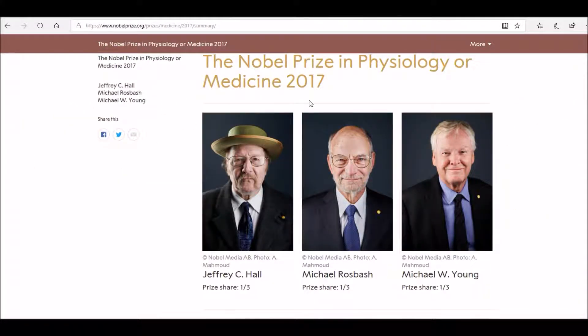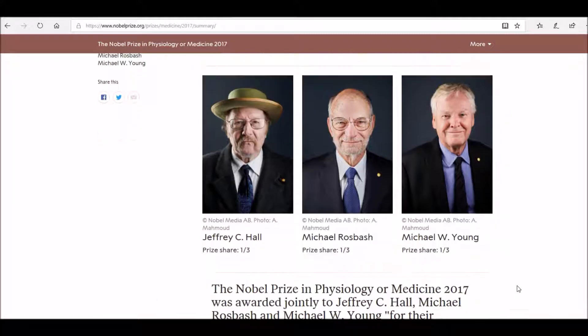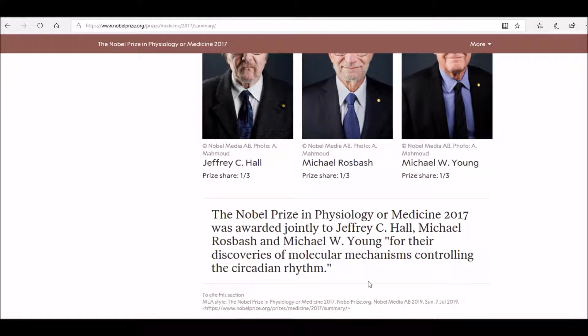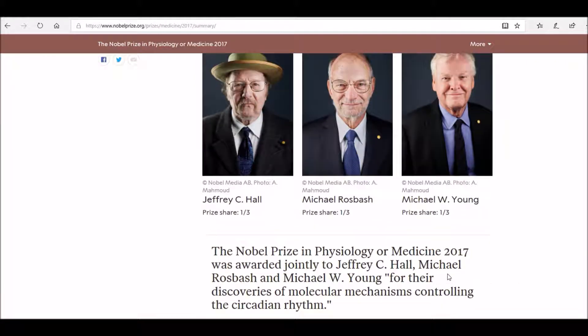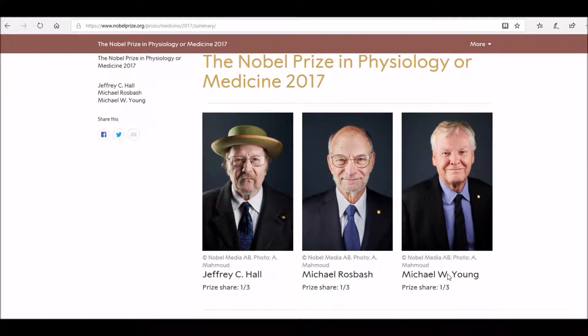Research into the circadian rhythm can be traced back to the 1700s, but it was only in 2017 when the Nobel Prize for Physiology and Medicine was given to Jeffrey Hall, Michael Rosbash and Michael Young for their work on the circadian rhythm and the key factors involved.